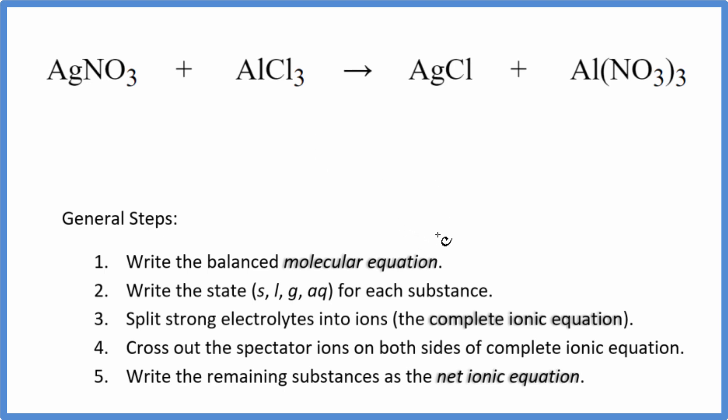First, for net ionic equations, we have to balance the molecular equation. I can see right away that I have three chlorines here and only one here, so I'm going to put a three, my coefficient for AgCl. Now I have three silvers and only one here. Put a three in front of the silver nitrate.